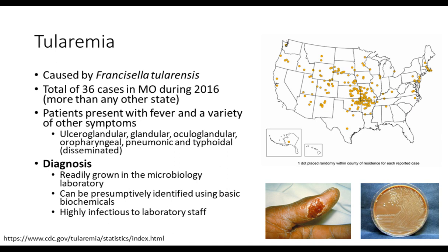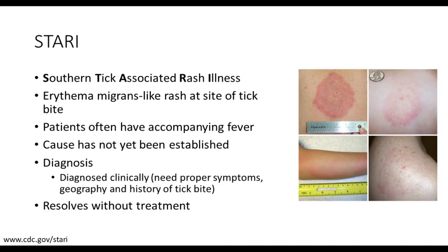Patients with Francisella present with fever and a variety of other symptoms. These symptoms give Francisella its different names based on how the patient is presenting: ulceroglandular, glandular, oculoglandular, oropharyngeal, pneumonic, or typhoidal. Here's an example of an ulcer caused by Francisella. It's readily grown in the microbiology laboratory and can be presumptively identified using basic biochemicals. However, this organism is highly infectious to laboratory staff, so it's very important to know we have a possibility of growing Francisella before we work with plates in the microbiology lab.